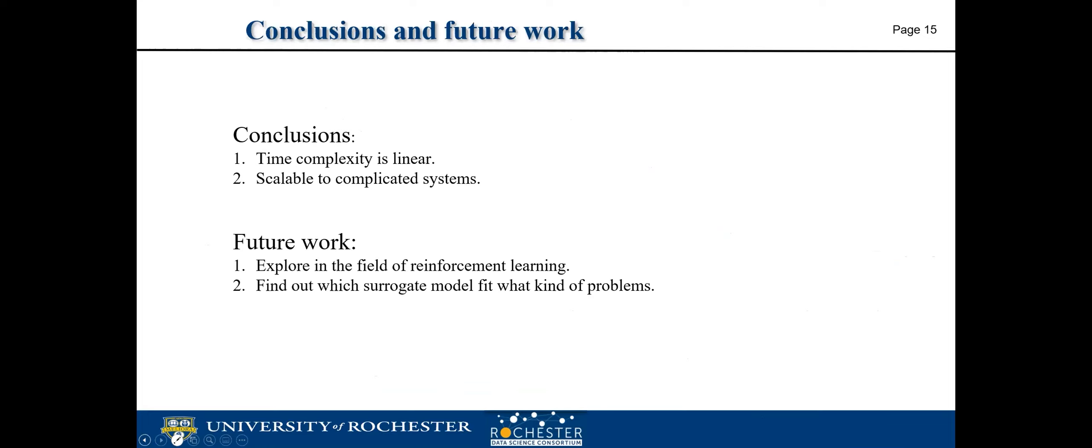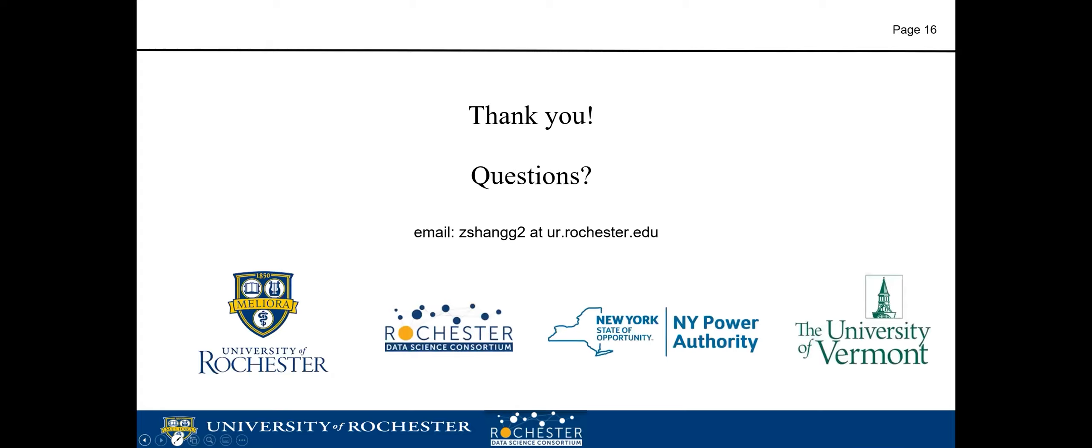Let's summarize now. The advantage of our work is that compared with Gaussian process regression, the time complexity of neural process is linear, and it is also scalable to complicated systems, which comes from the neural network. In future work, we consider two aspects. The first one is we want to explore the field of reinforcement learning for the parameter optimization problem. The second is we want to dig deeper to find which surrogate model fits what kind of problems. Thank you for your attention.